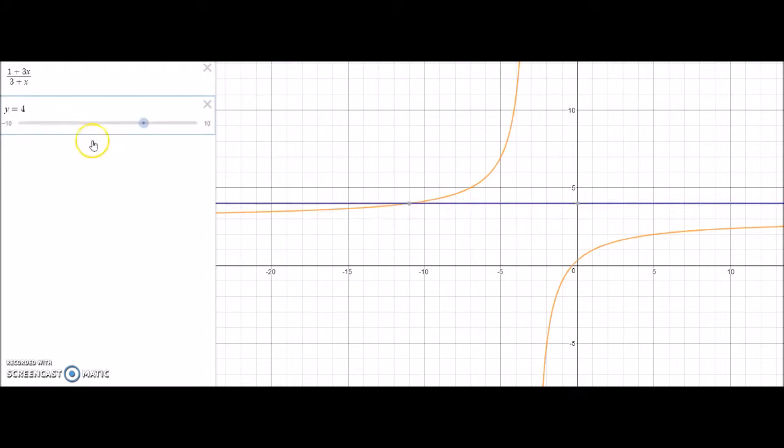So our initial goal was to find what x equals when y equals 4. And so we just have to find the intersection points of these two lines, which would be negative 11.